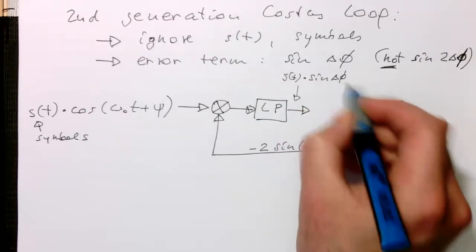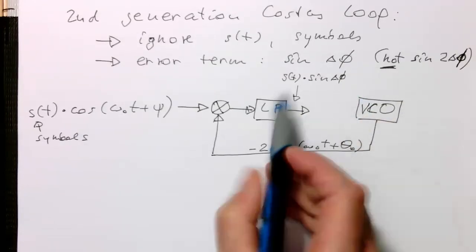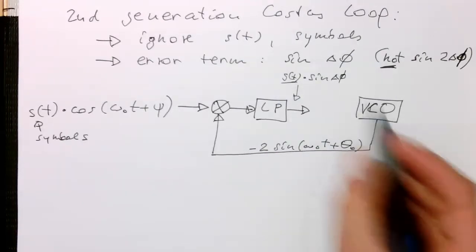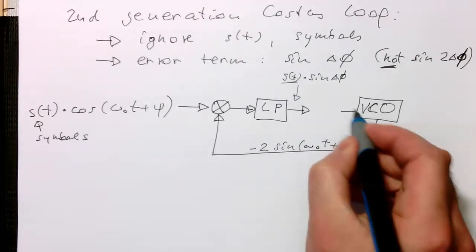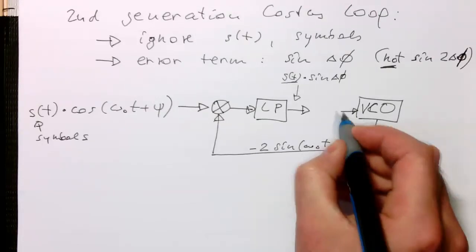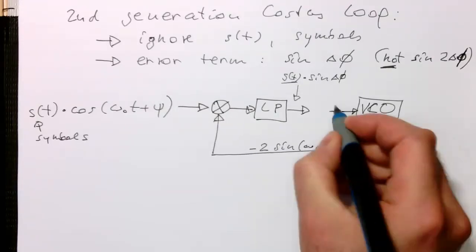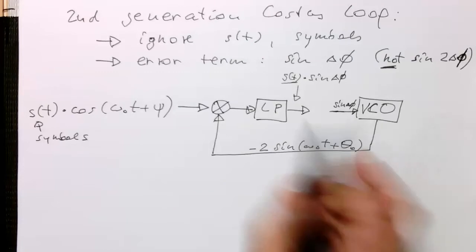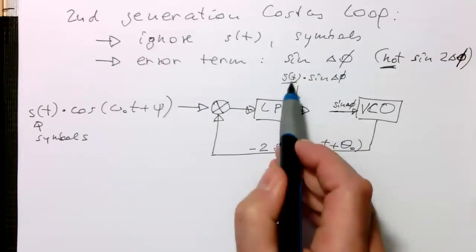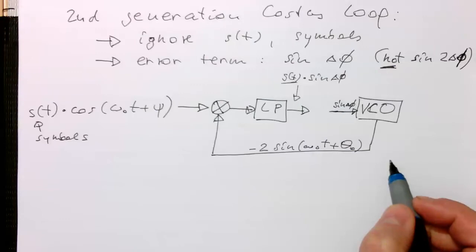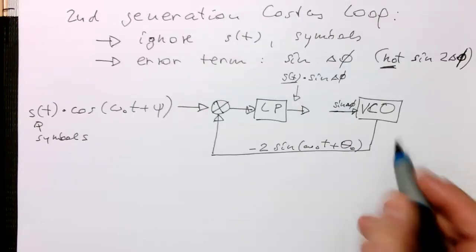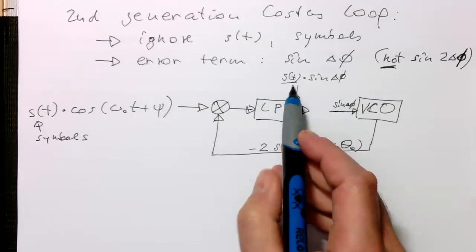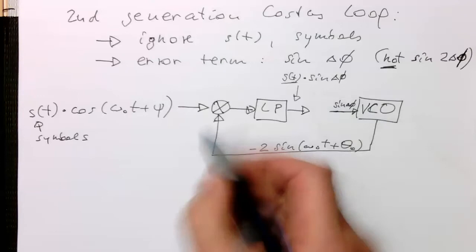Because obviously the low-pass filtered version will still be containing our S of T and our phase angle. And this S of T can be plus one and minus one. So what we want to have is just the error signal sine of delta phi without the S of T, so that basically phase changes won't mess up our PLL. And the idea is that we just use this S of T itself to eliminate it.